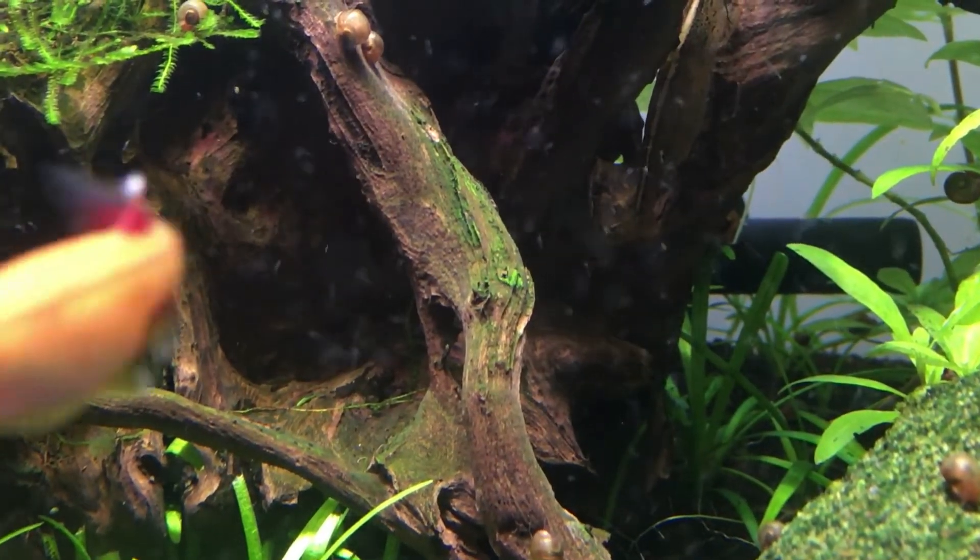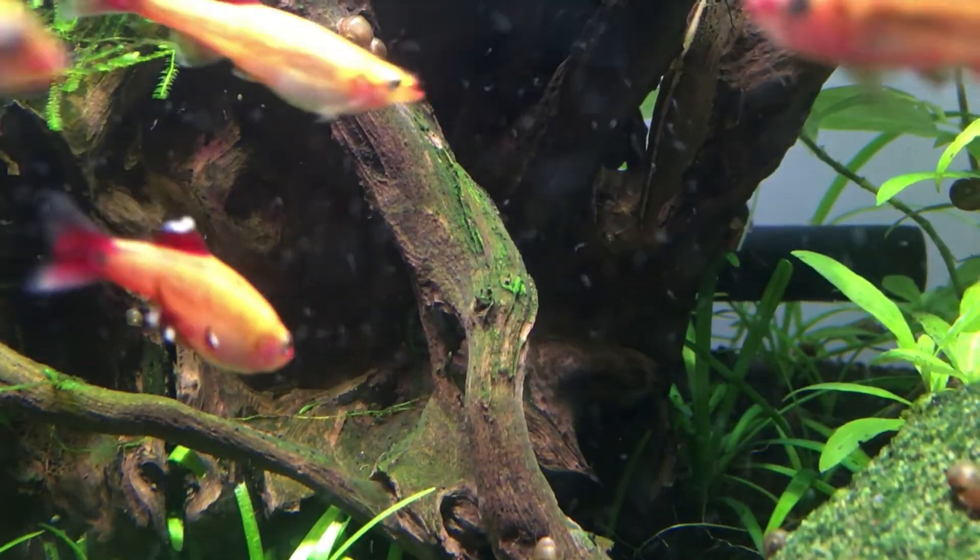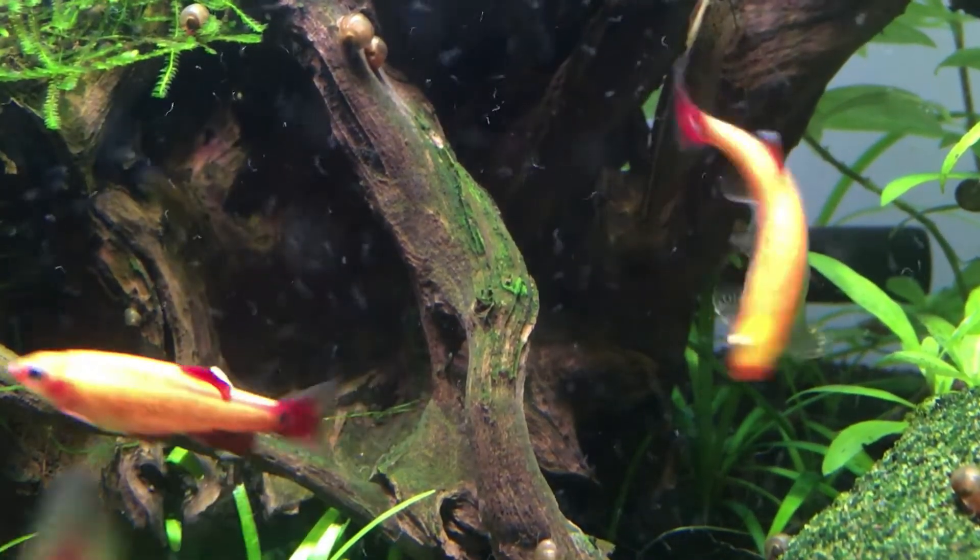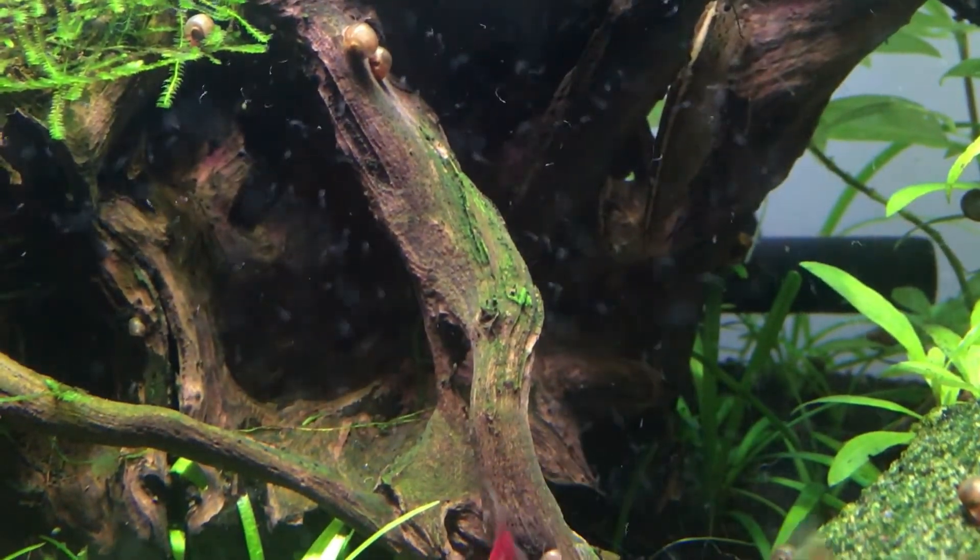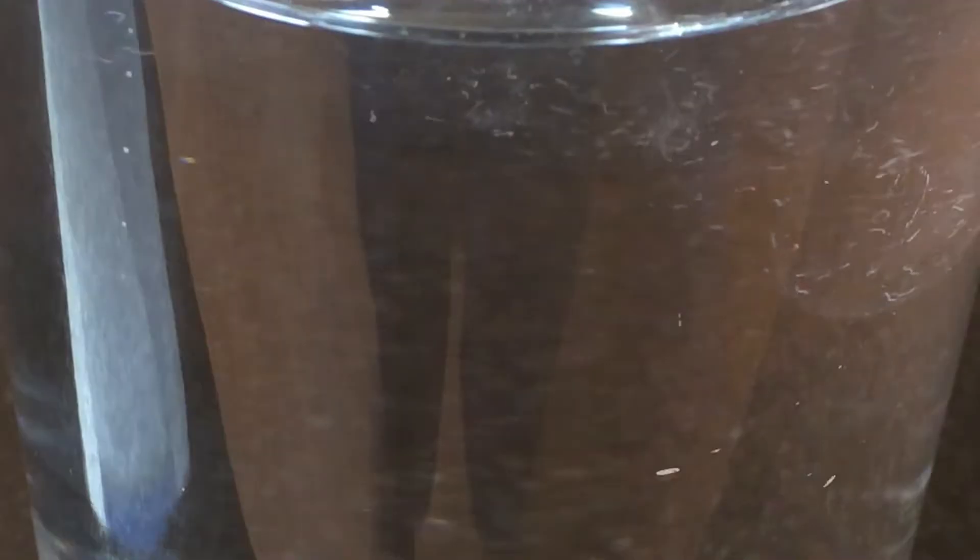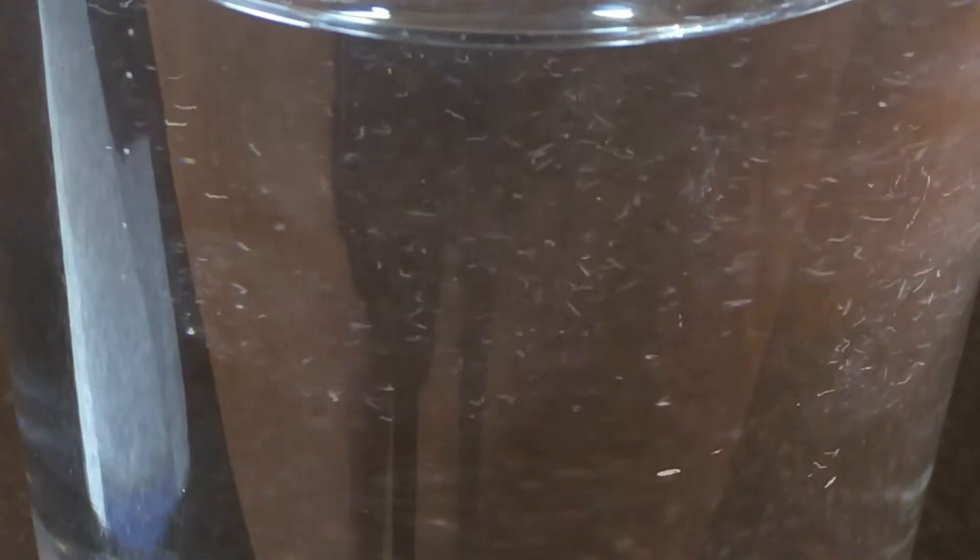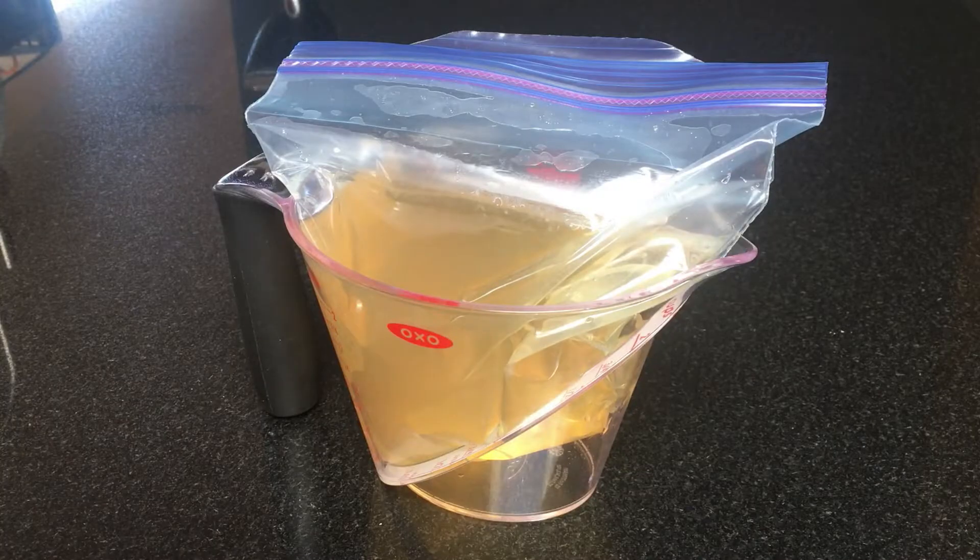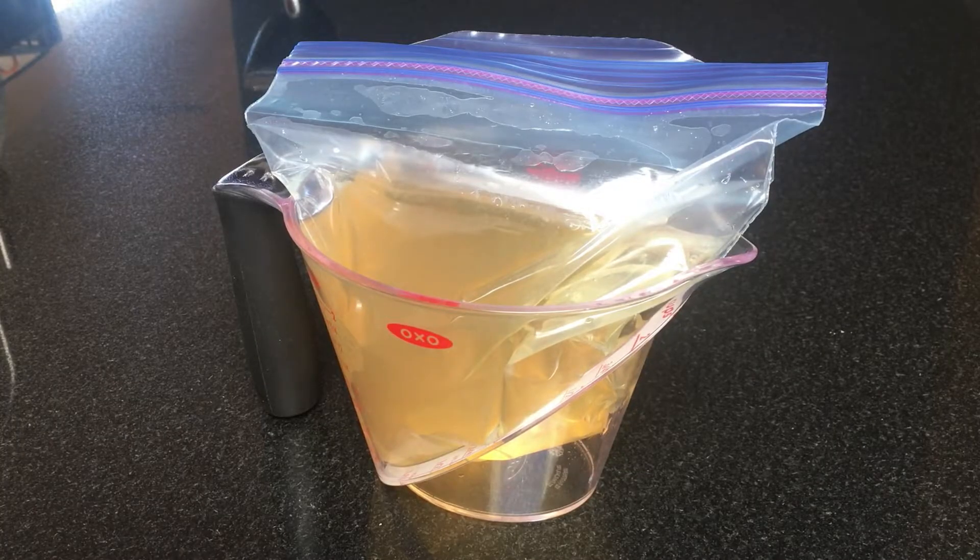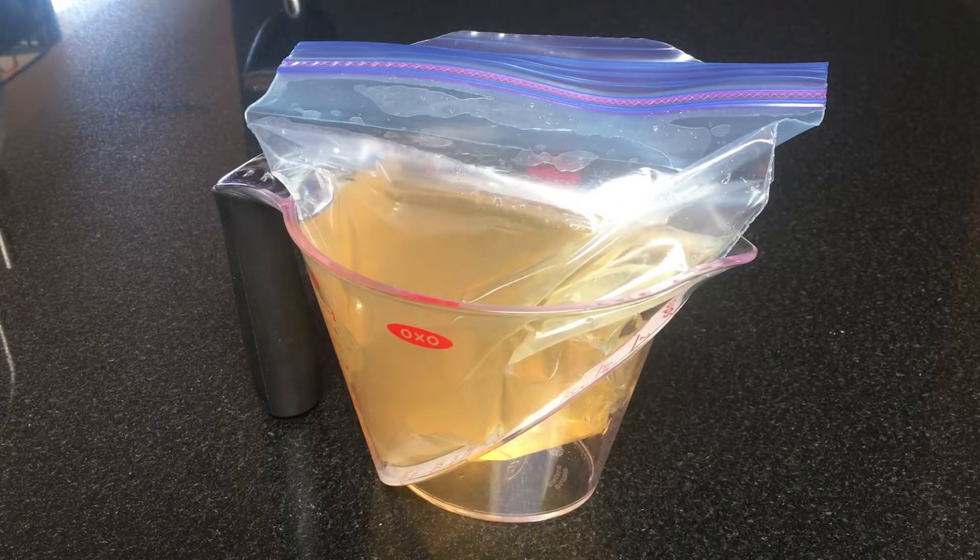One advantage of feeding vinegar eels is that they swim and stay suspended in the water column where fish and fry can find them and eat them. In contrast, microworms sink rapidly and can get lost in the substrate. I bought a 500ml culture from a local hobbyist for $5.